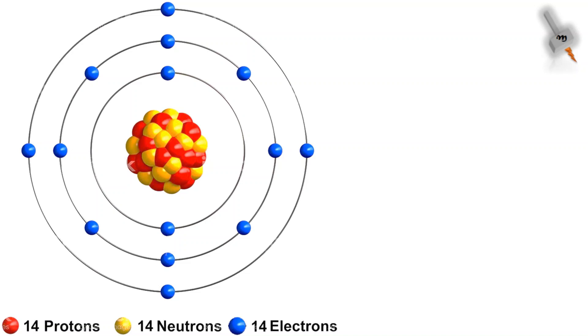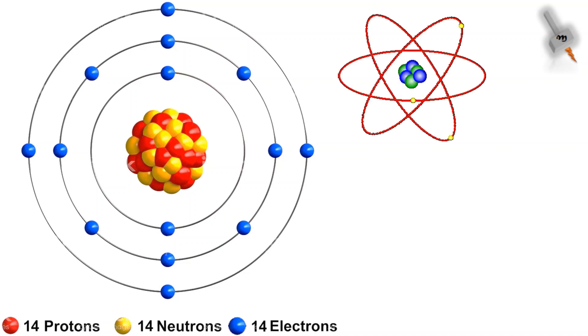Proton and neutron are concentrated at the nucleus or the center of the atom. The electrons revolve around the atom like how planets revolve around the sun.